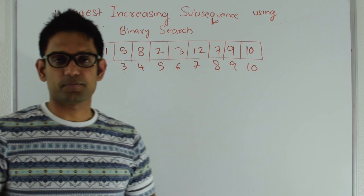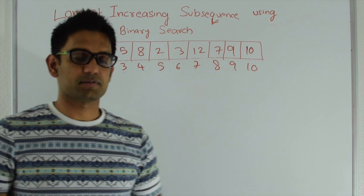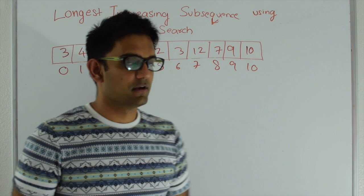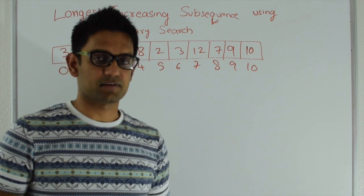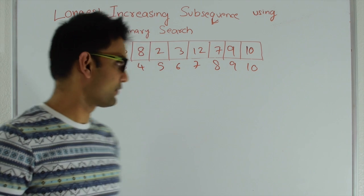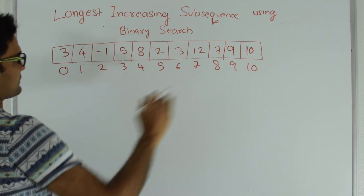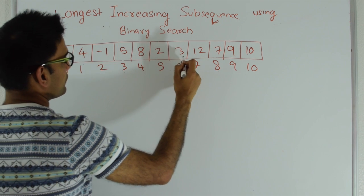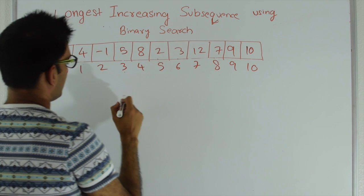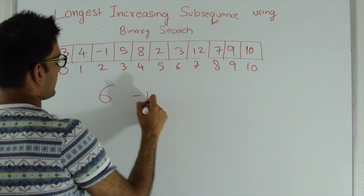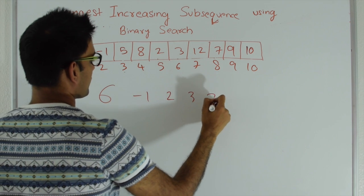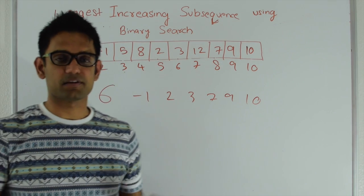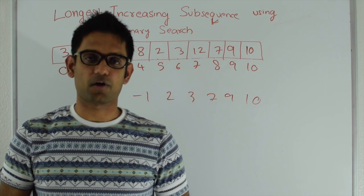What is the longest increasing subsequence? A subsequence is a sequence in an array which might not be contiguous. A longest increasing subsequence is such a subsequence which is increasing in order. The longest increasing subsequence in this example array is minus 1, 2, 3, 7, 9, and 10, so its length is 6. In the next section let's look at how to find this in n log n time.